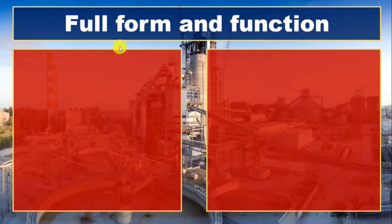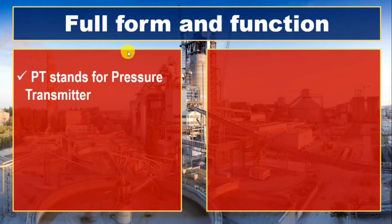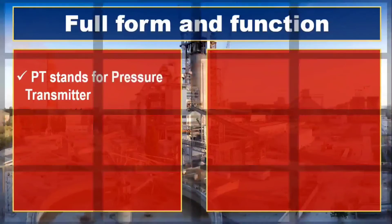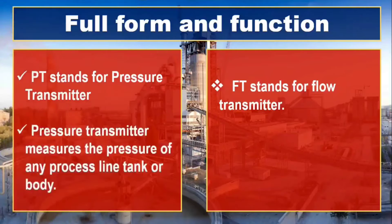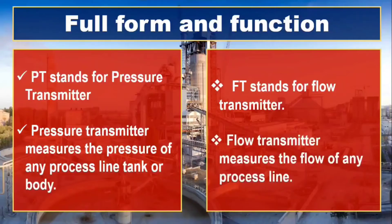Let us see the first comparison: full form and functions. The full form of PT is pressure transmitter, whereas the full form of FT is flow transmitter. Pressure transmitter measures the pressure of a process line, tank or body, whereas flow transmitter measures the flow of any process line.